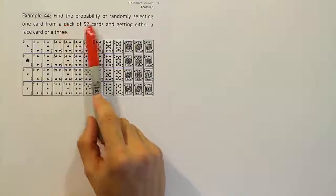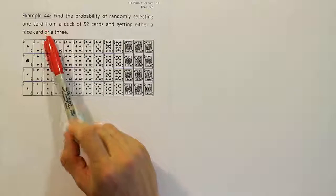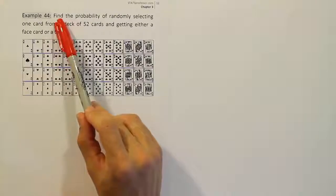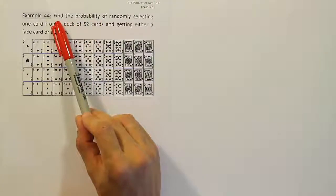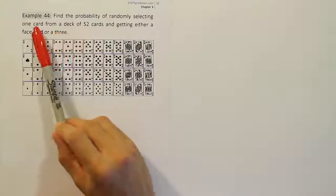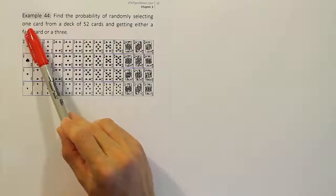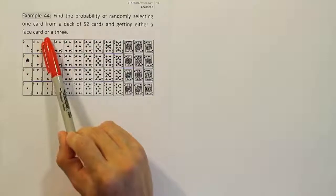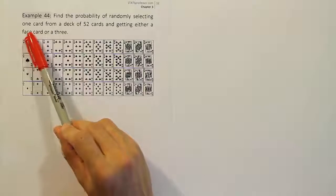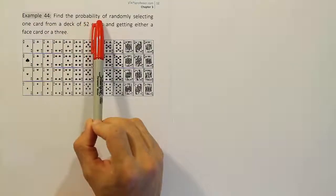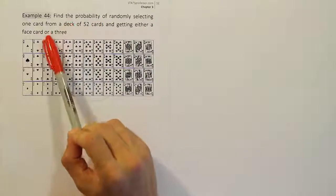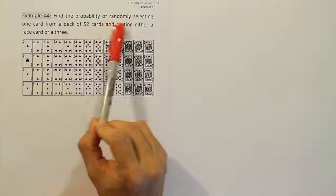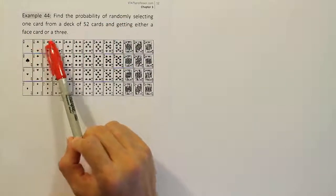Example 44. Find the probability of randomly selecting one card from a deck of 52 cards and getting either a face card or a 3. It's clearly a probability problem by the phrase 'find the probability.' We're only selecting one card, and we see two things surrounding the word 'or.'